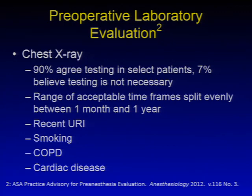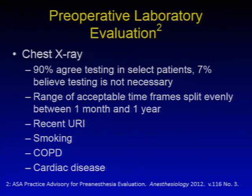For chest X-ray, 90% agree on testing in select patients. The range of acceptable time frames is split between one month and one year. It is recommended for recent upper respiratory tract infection, smoking, COPD, or cardiac disease — though this needs to be taken in the context of stable COPD or stable cardiac disease in well-compensated patients with no recent changes in baseline status.